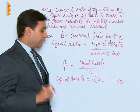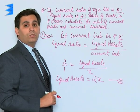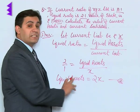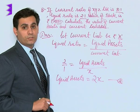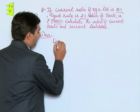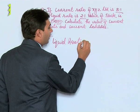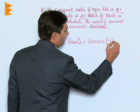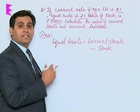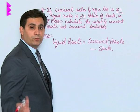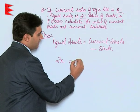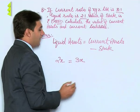From equation 1, current assets = 3X. We know that liquid assets = current assets minus stock minus prepaid expenses. Since prepaid expenses are not mentioned, we assume them to be zero. By equation 2, liquid assets = 2X; by equation 1, current assets = 3X; and stock is given as ₹1,50,000.